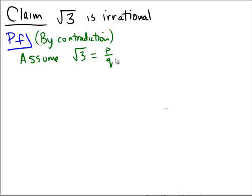Assume that the square root of 3 equals p over q for p, q being integers, and q not equal to zero. Okay, and we're going to hopefully derive a contradiction from this assumption.